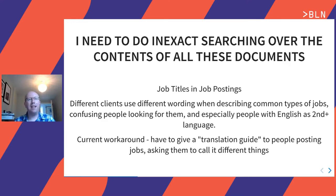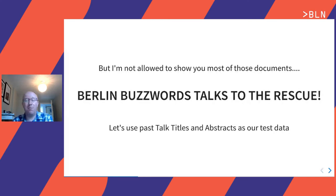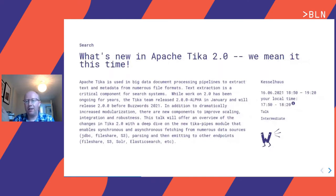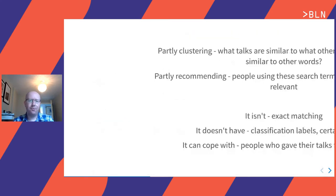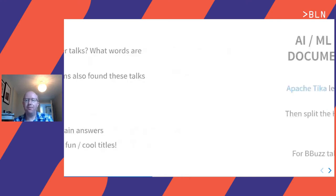What we'd really like is to be able to find nearly the right thing, even though we don't know what it is. I'm not allowed to show you a lot of those documents. But what we do have is a whole load of Berlin Buzzwords talks — six years worth, to be exact. So what we're going to use is these Berlin Buzzwords talks, titles and abstracts, as the test data as we go through the talk. They look a bit like this: you've got a track, a title, an abstract, and a speaker. You'll also see that the format has changed over the years. So we're going to need to do some pre-processing, and what we're going to want to do is a mixture of clustering or recommendation.